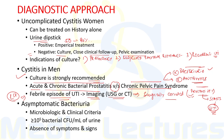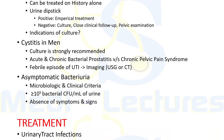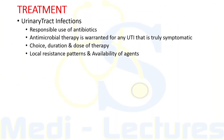Diagnosis of asymptomatic bacteriuria requires two criteria: microbiological — ≥10⁵ bacterial colony-forming units per mL of urine — and clinical — absence of signs and symptoms pertaining to urinary tract infection. Both criteria must be fulfilled.